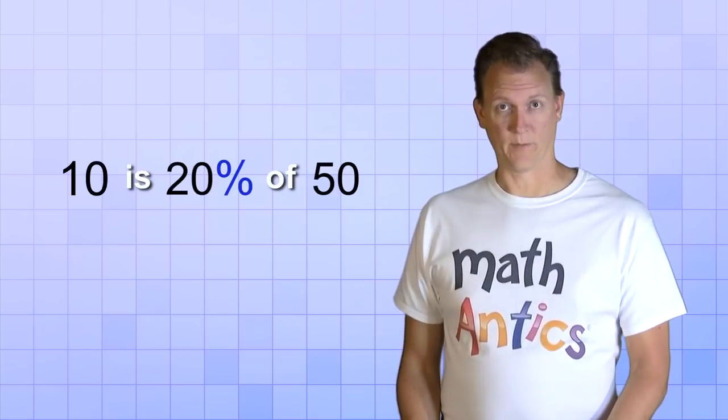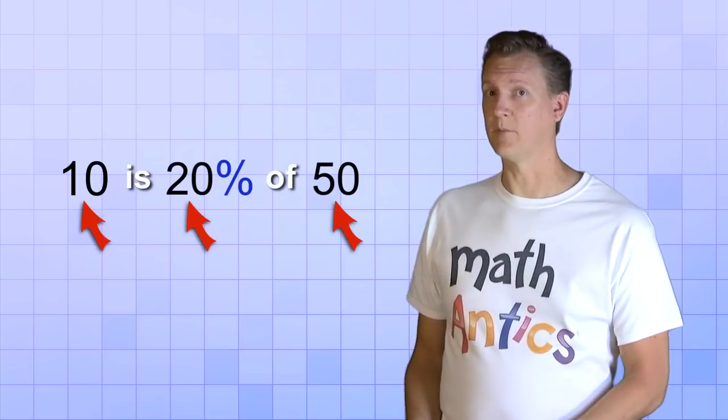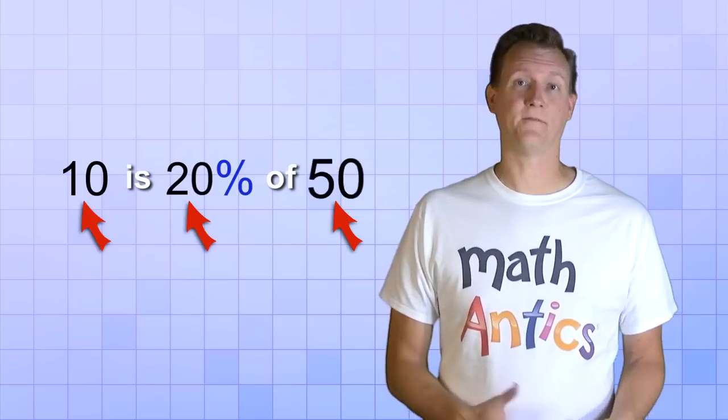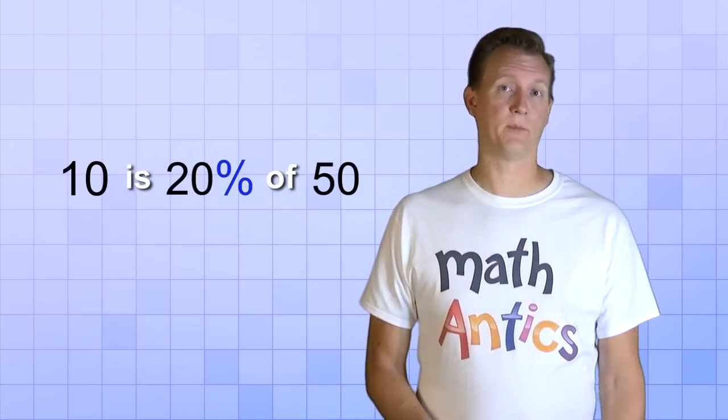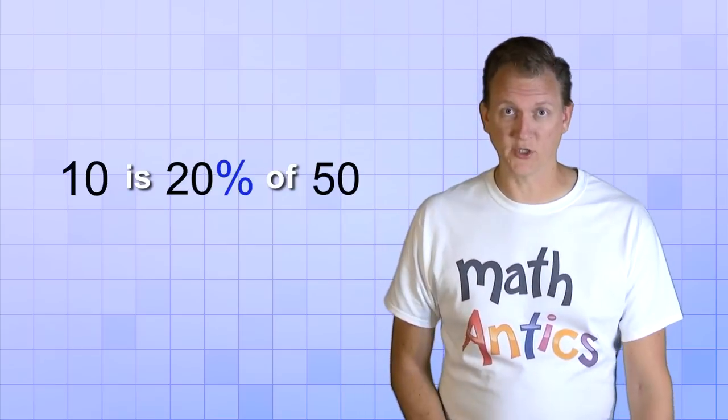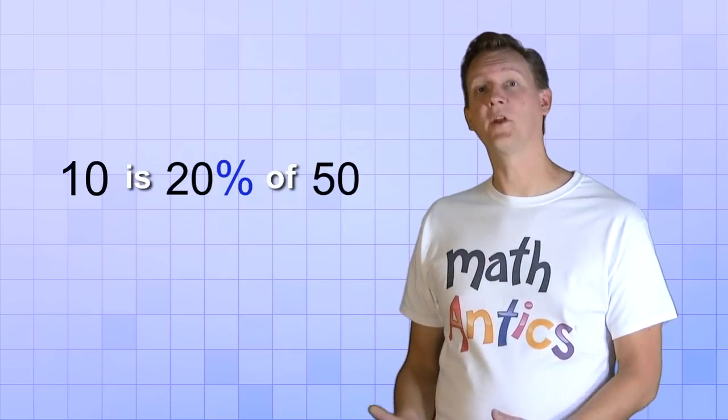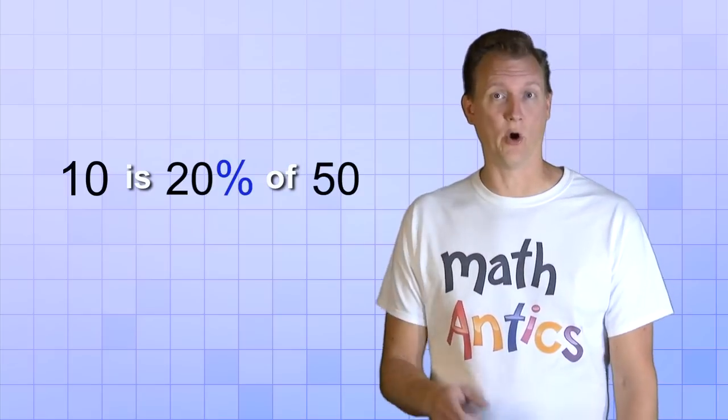Let's look closely at that statement for a minute. Notice that there's three different numbers in it, 10, 20, and 50. And that's because a percentage is really a relationship between three numbers. Well, actually it's a relationship between four numbers, but the fourth number is always 100, so you always know it.